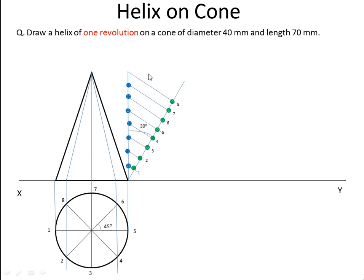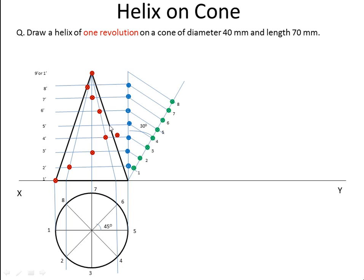Draw horizontal lines from each point. We get the points. Number them: 1, 2, 3, 4, 5, 6, 7, 8, and last is 9. Mark the intersections to get P1, P2, and so on. Draw the curve through these points.